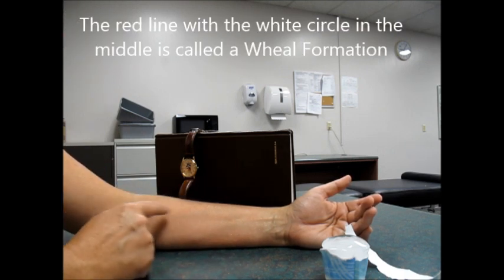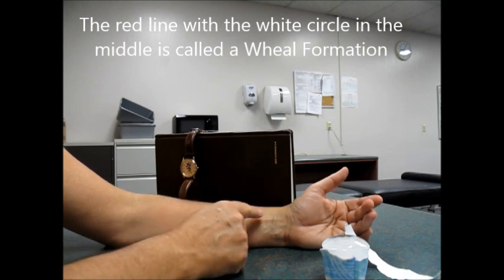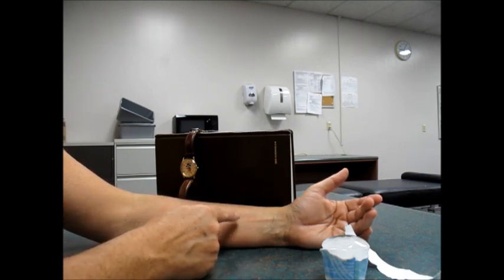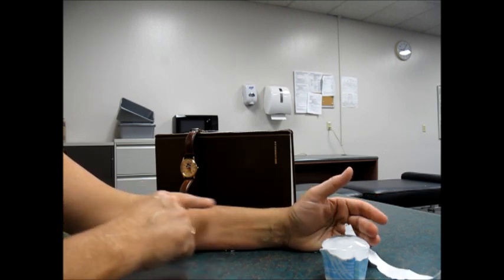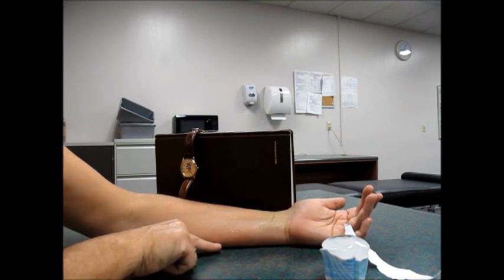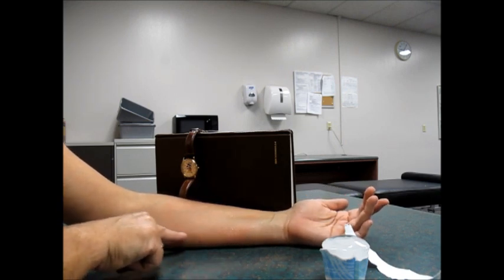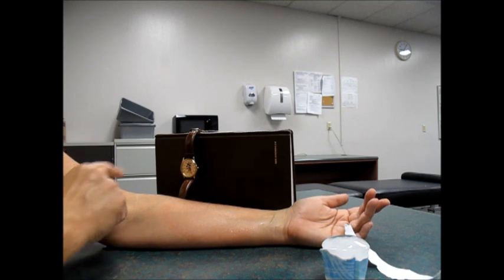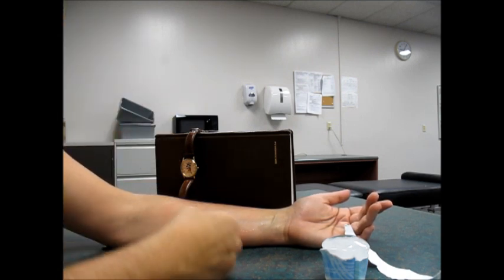And then a whiter area in the middle—this is a classic wheel formation right there. This will stay like this probably for just a few minutes. You can see the red line right there showing up perfectly. This is called the wheel, W-H-E-A-L formation. You saw how fast that took, just two or three minutes for me to get numb. This is something that you can get your patients to do.